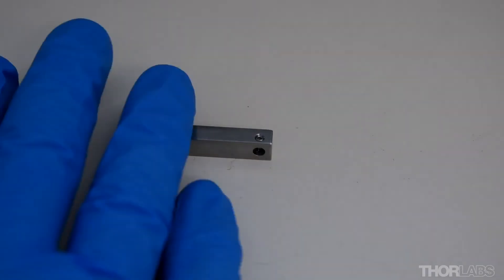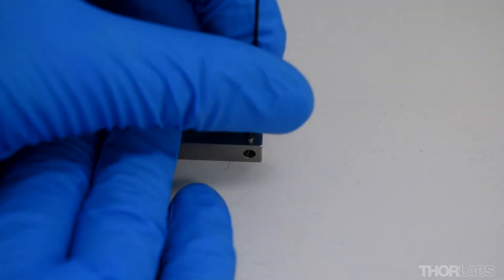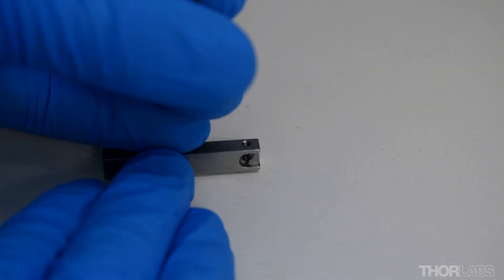For use in the other fiber holding block, the set screw which holds the LED will need to be moved to the other side.